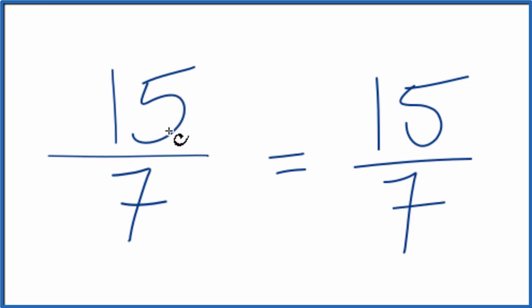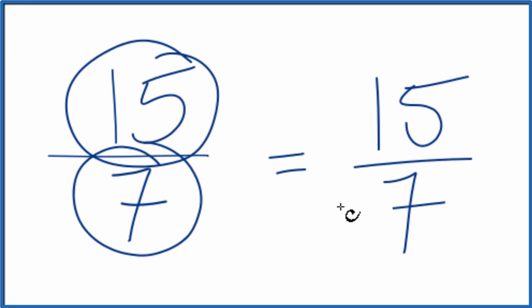Do note that 15 sevenths, it's an improper fraction. The numerator is larger than the denominator. So we could change this to a mixed number. Let's do that.